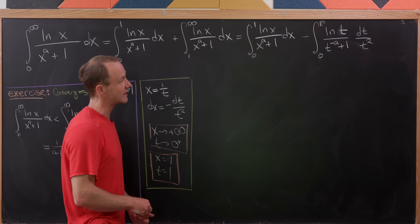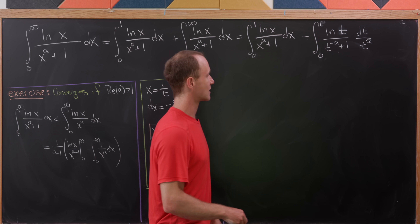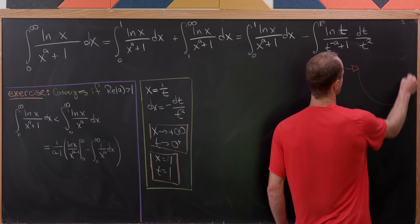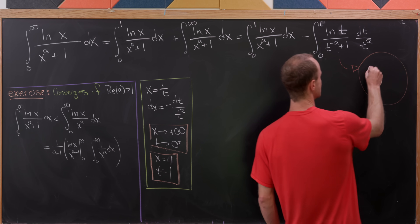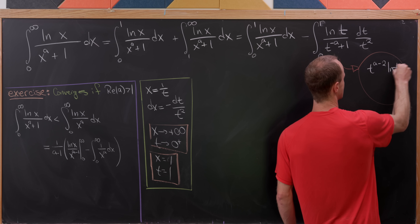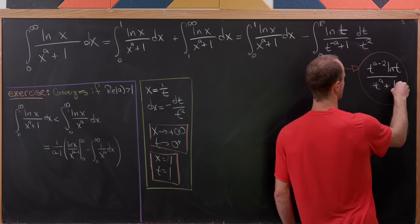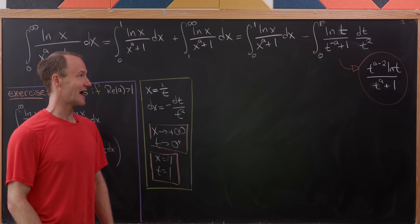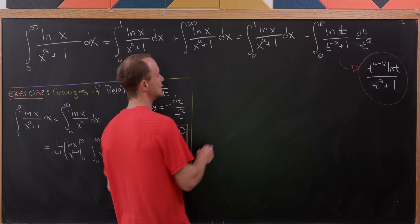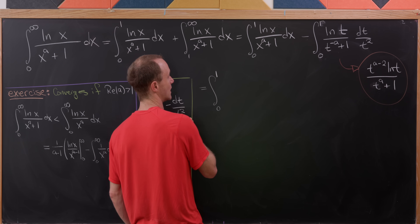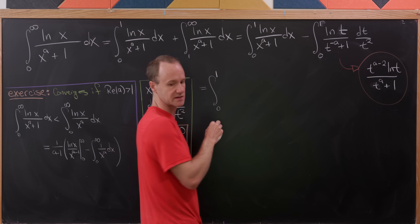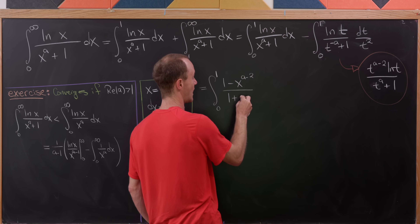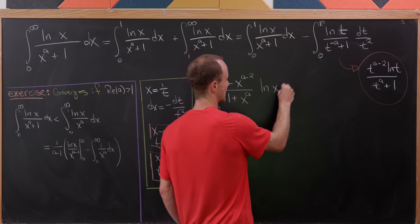Clearing the denominator back so that we have t to the a, the integrand becomes t to the a minus 2 times the natural log of t over t to the a plus 1. Renaming t back to x and pushing the two integrals together, we arrive at the integral from 0 to 1 of 1 minus x to the a minus 2 over 1 plus x to the a, all times the natural log of x, dx.